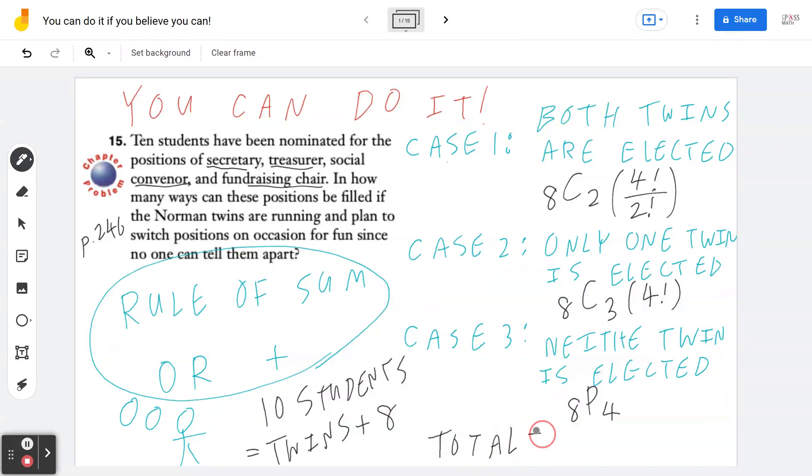If you think about the total here, if you grab the calculator, eight permutation four is 1,680. If you think about case two, eight choose three times four factorial is going to be 1,344. In the first case, if you think about eight choose two times four factorial divided by two factorial, that's going to be 336, which means if you add them up, because using the rule of sum, this is going to be exactly 336 plus 1,344 plus 1,680, which equals to 3,360 ways.